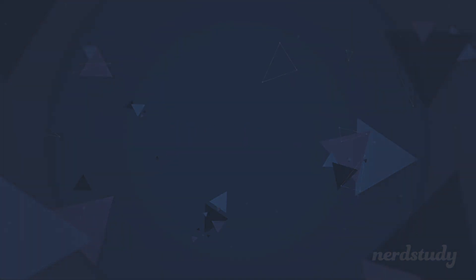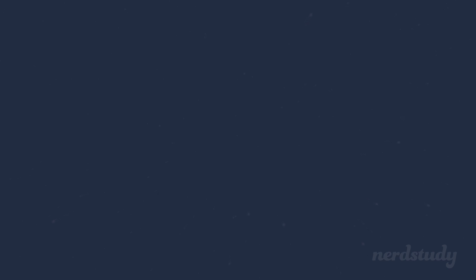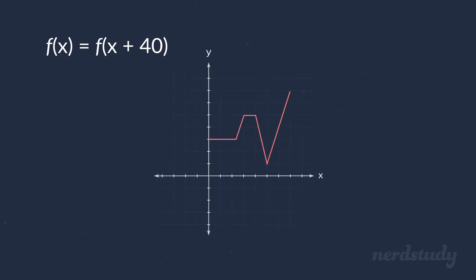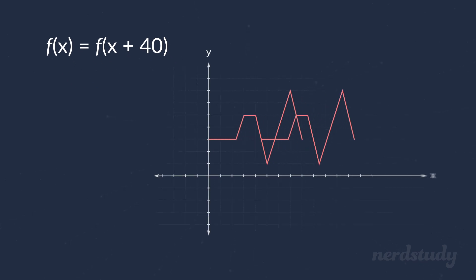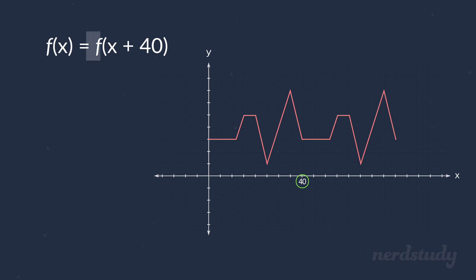Before we close this video, I'd like for us to think of periodic functions in a particular way. Let's say that f of x is a periodic function. This means that at a certain interval, the value of the graph would repeat and be the same. Let's say the interval is every 40 units on the x-axis — that means f(x) is equal to f(x + 40), since the y-values would repeat exactly 40 units later on the x-axis.